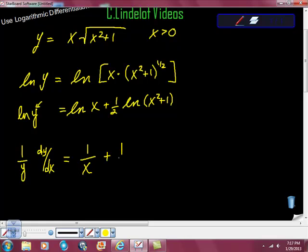We have this constant multiple here of 1/2. The first derivative of ln(x² + 1) is 1/(x² + 1), which is 1 over the function, times the derivative of the inside. The derivative of x² + 1 is just 2x. So hopefully you can see all that.